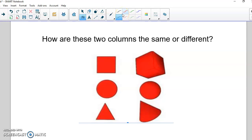I'm sure a lot of you were talking about how the column on the left is flat and the column on the right seems to be almost 3D. Well you would be right because the column on the left we call 2D shapes because they're flat. They only have two dimensions.